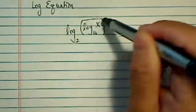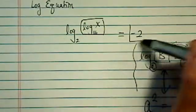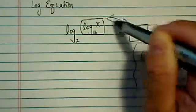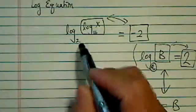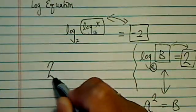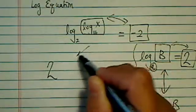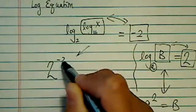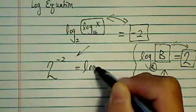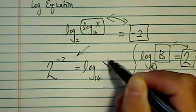So let's do the same thing here. We're going to treat this big complicated thing as a box. We're going to swap those two gift boxes, take the same base. So this becomes 2 to the minus 2 is equal to log base 16 of X.